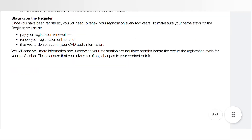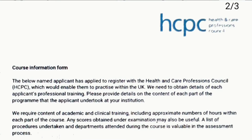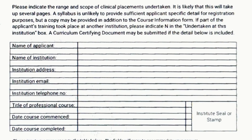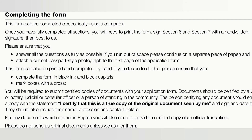Now moving on to the HCPC Course Information Form. This form needs to be filled by someone at the institution where you completed your course — such as your head of department — someone who can provide details of your academic and clinical training. They need to include the number of hours you completed and any scores obtained in examinations. The form must include your name, the institution's address and telephone number, the course title, start and completion dates, and a stamp or seal of the institution. It should also include a description of the course content, the examination method, and the assessment methods used.